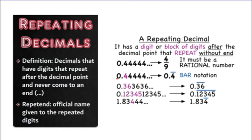So in the example of 0.44 repeating, you put the bar over the 4 because the 4 is repeating. Or in 0.363636 and so on — the 36 is repeating, so you put the bar over 36.